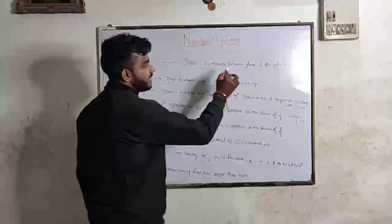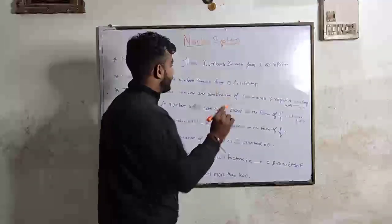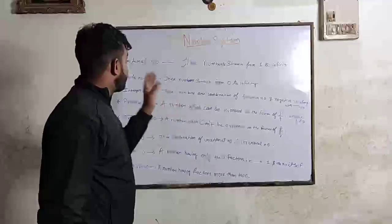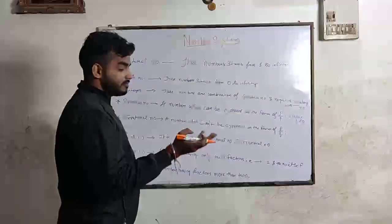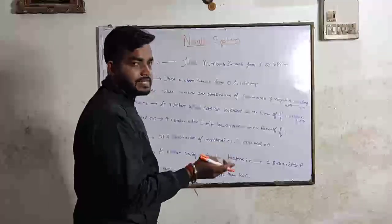Natural number. This number is started from 1 to infinity. Example. And natural number is also called countable number because we are starting counted with 1, 2, 3, 4, 5, 6, to infinity.